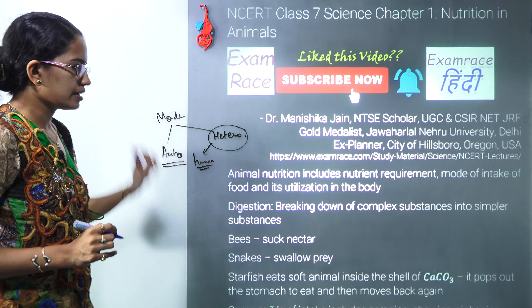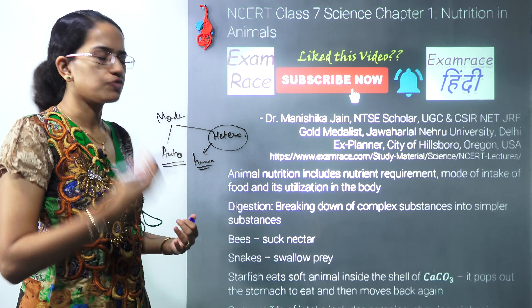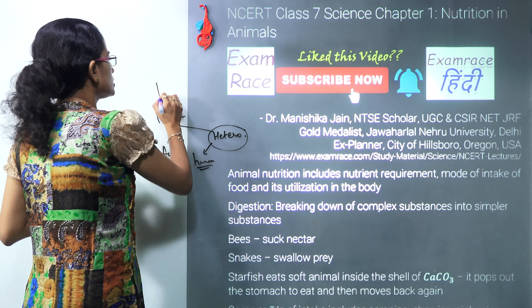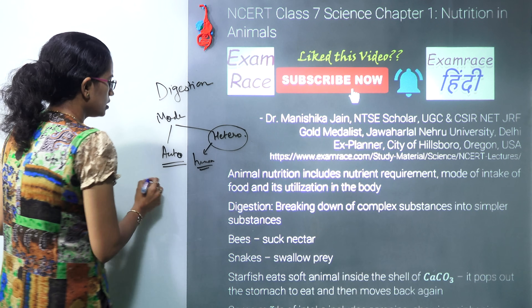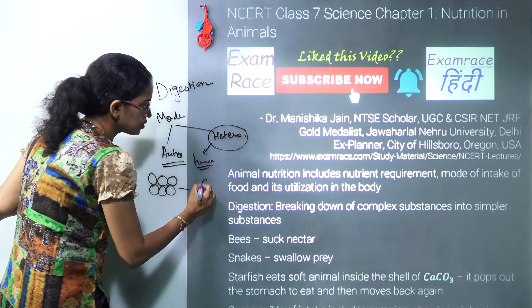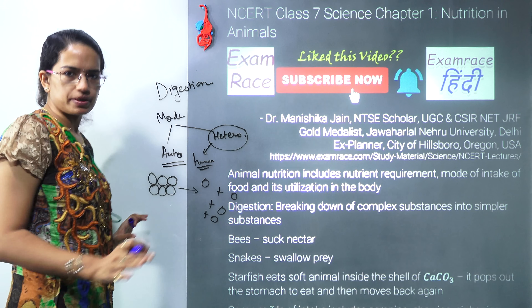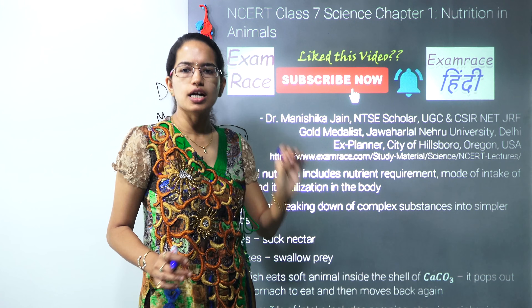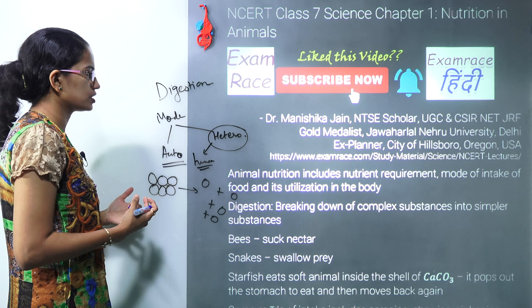When we talk about animal nutrients, it's in the form of carbohydrates, fats, vitamins, and minerals. What occurs is a process of digestion — that is, breaking down the complex molecules present into simpler molecules. That's a very simple definition of digestion. This process of digestion occurs through a system known as the digestive system.